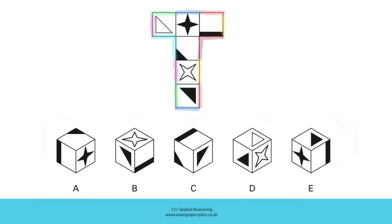Something similar happens in option B. Look at these two faces — we know that they will meet, and this is their shared edge. But on this face, it's the larger white shaded area which is closest to the shared edge. In B, however, it is a different aspect of the figure which touches the shared edge between those two faces, and this does not happen on the net. That means that B is also incorrect.